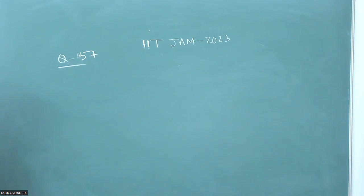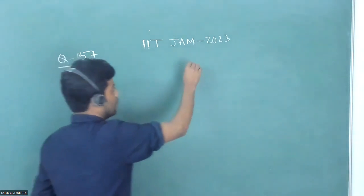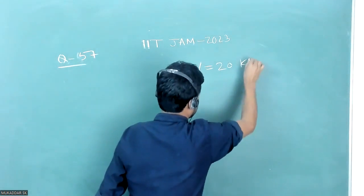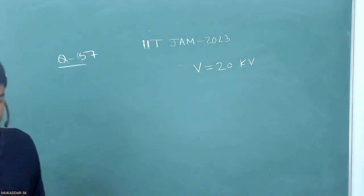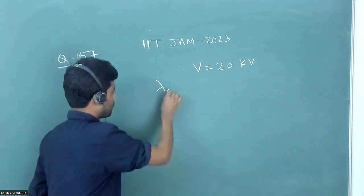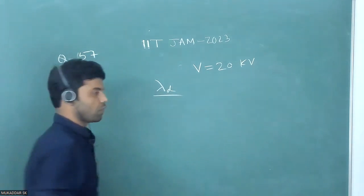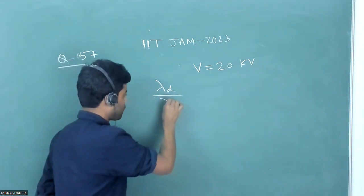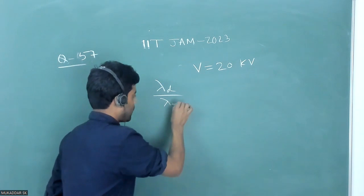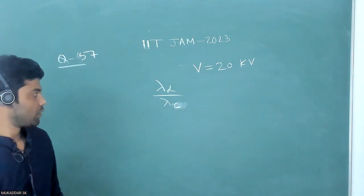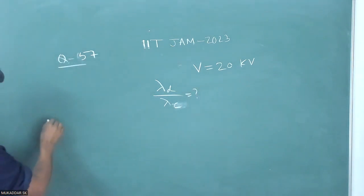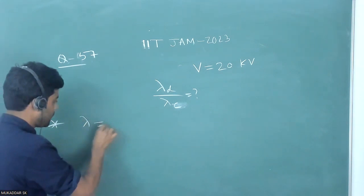The question states that the potential difference applied across an X-ray tube is 20 kilovolts. We have to calculate the ratio of the de Broglie wavelength of the electron to the minimum wavelength of X-ray.